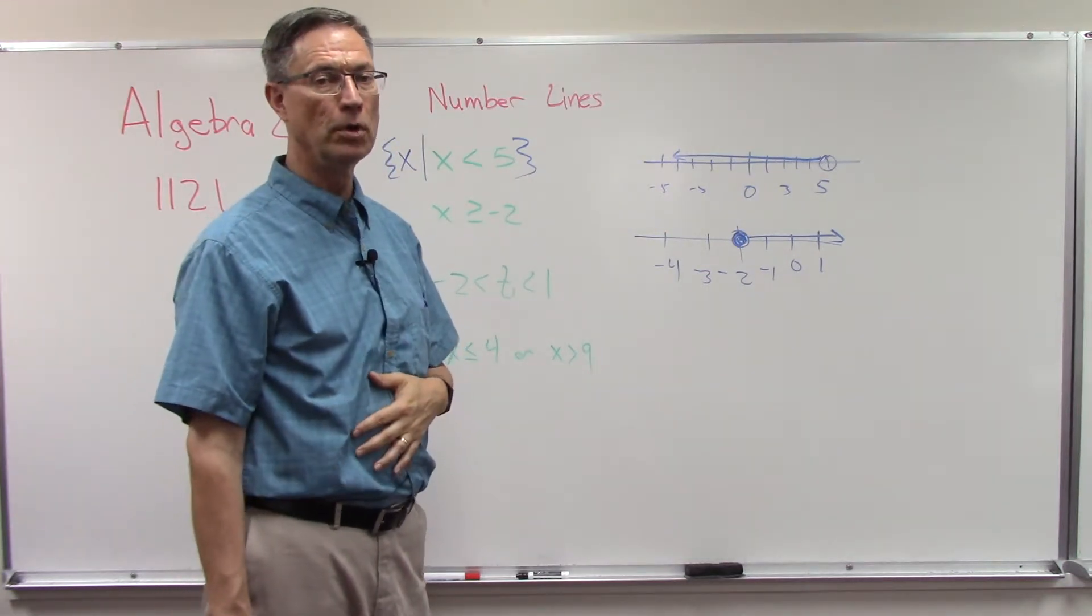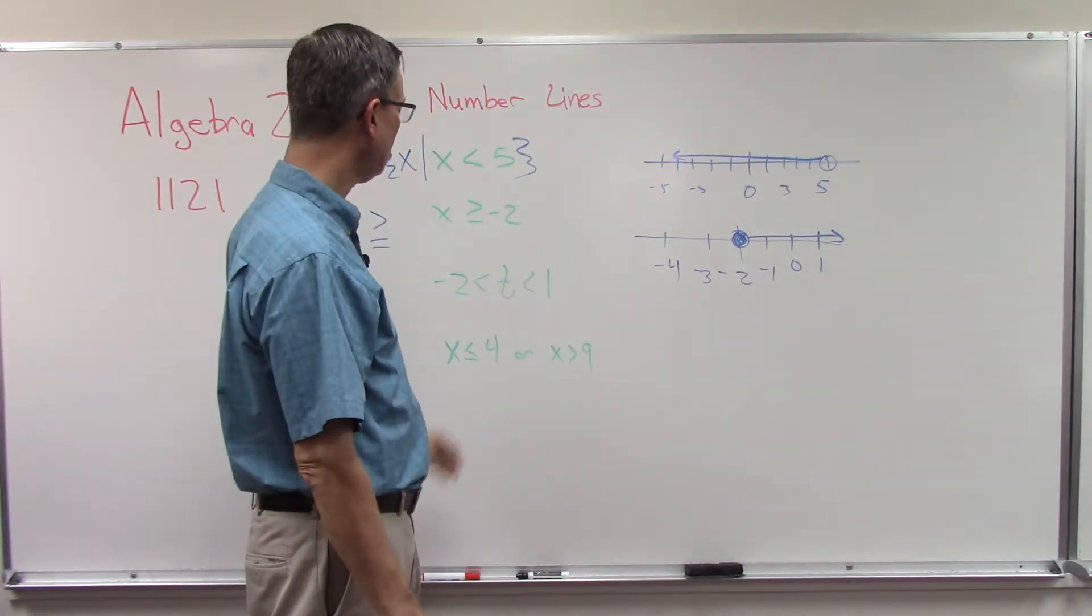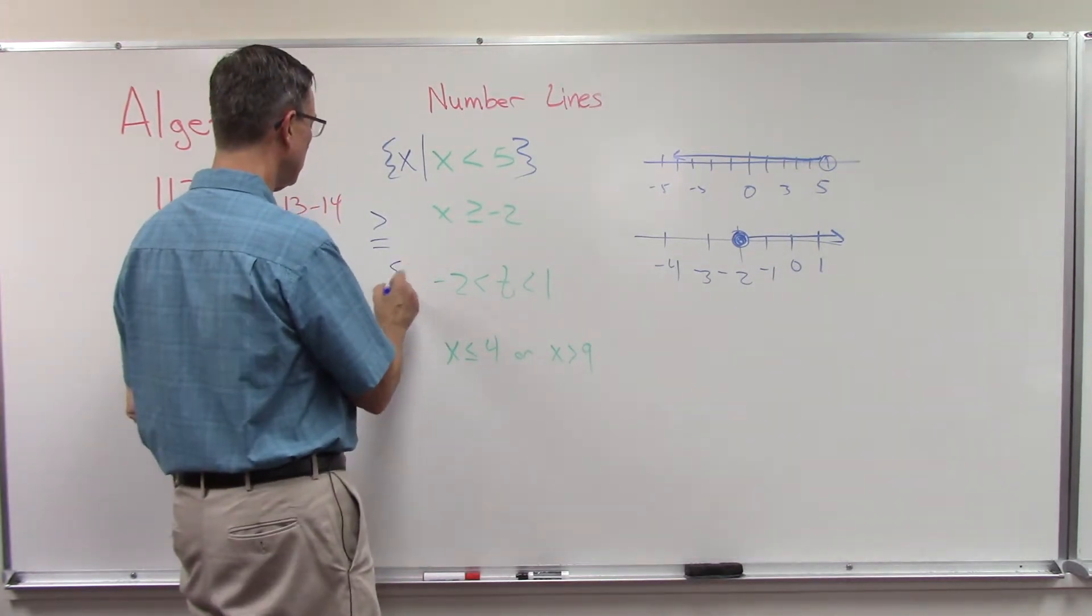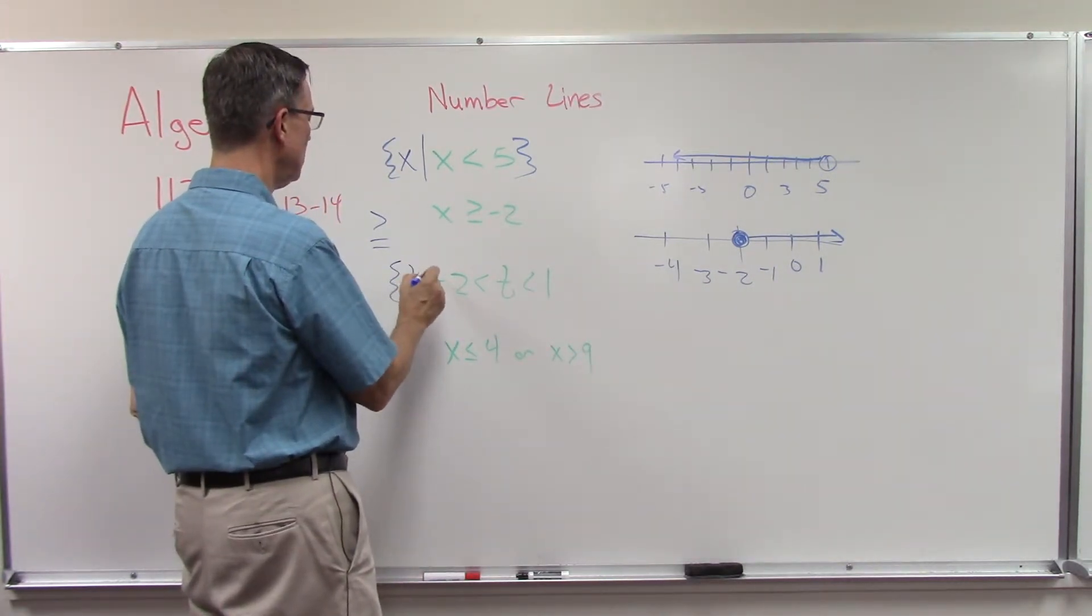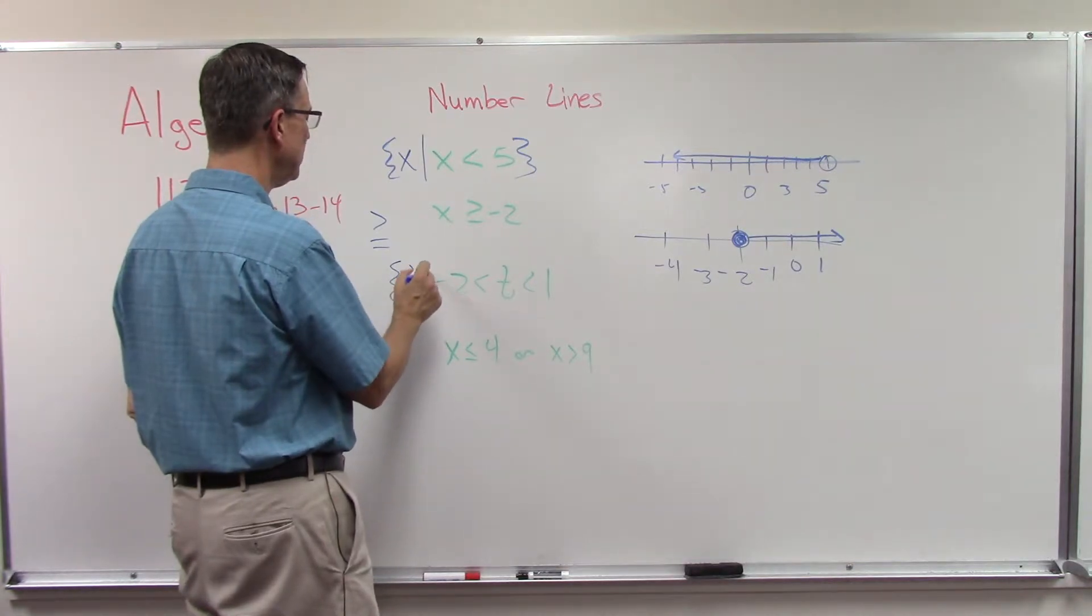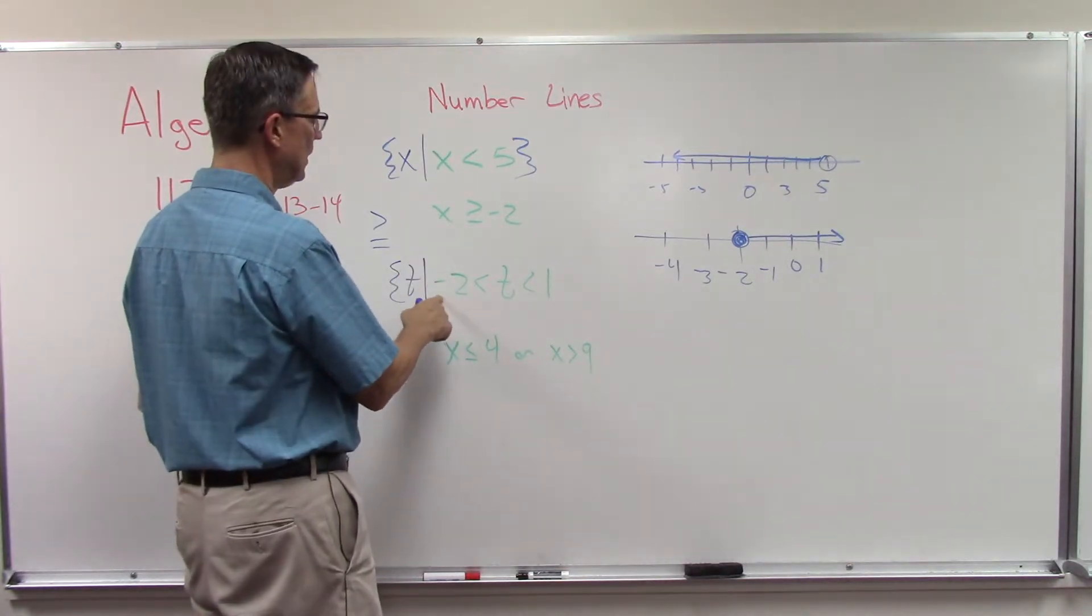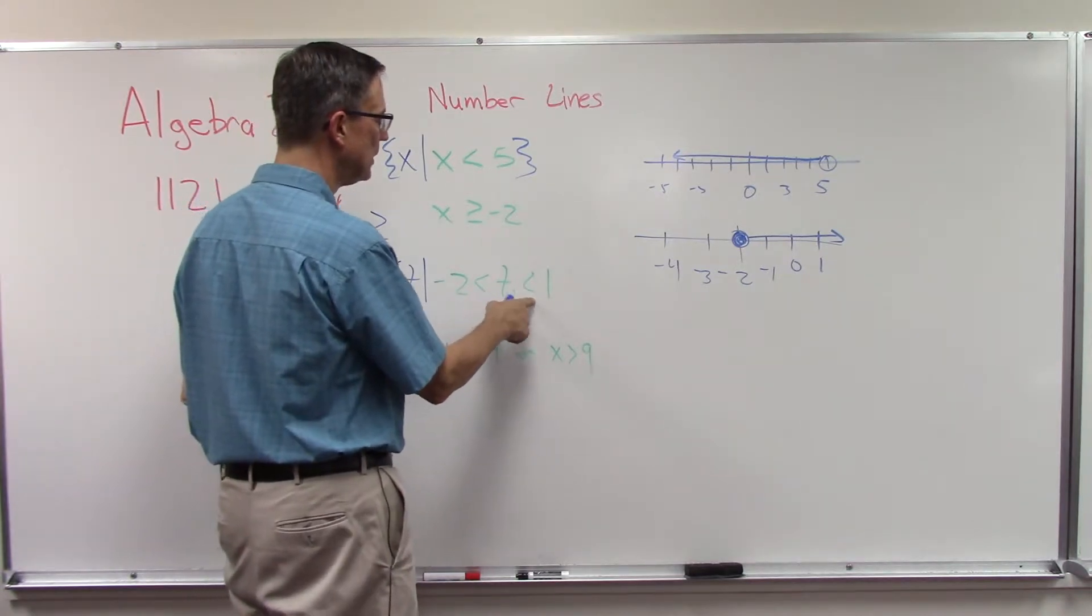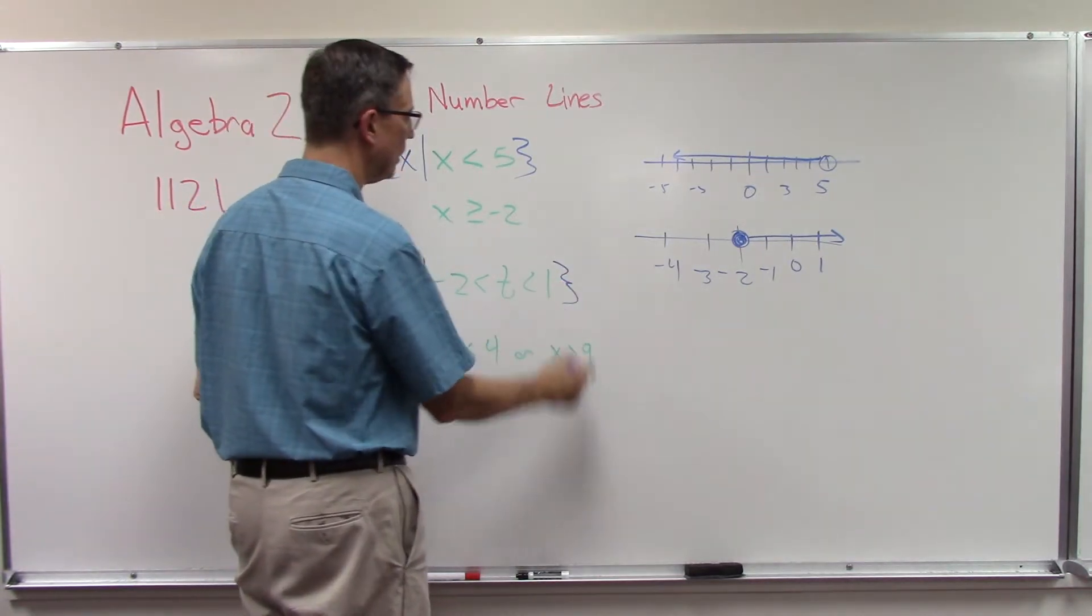Now notice in this one - and again, correct symbols would be t, the set of t such that negative 2 is less than t and t is less than 1. All right.